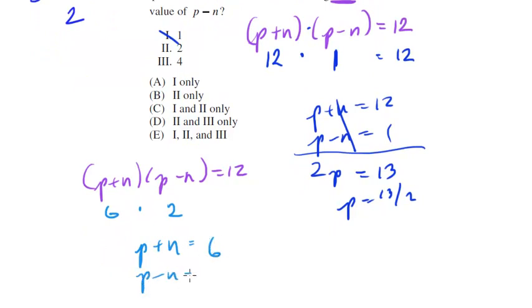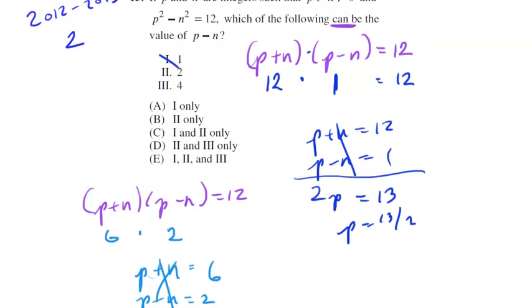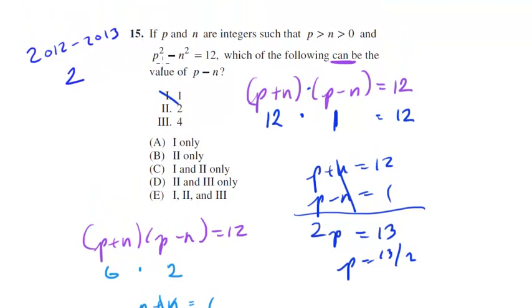So we'd get 2p, bring this down, 2p equals 8 (this cancels), so p is 4. And if p is 4, then n would equal 2. So we'd get p plus n is 6, p plus 2 is 6, and p minus n is 2. That works out perfectly, so 2 is one that works.